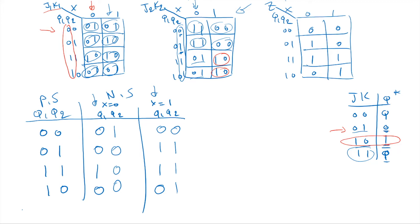Since this is a Mealy model, the state table entries are written as next-state/output. The Z output values — 0, 1, 1, 0 for X=0 and 0, 0, 1, 1 for X=1 — are added with a slash notation in the table.